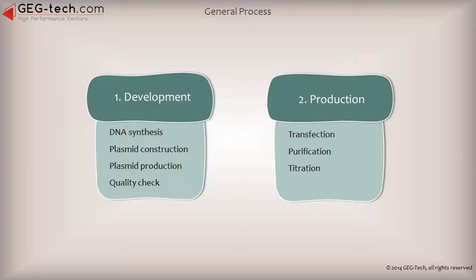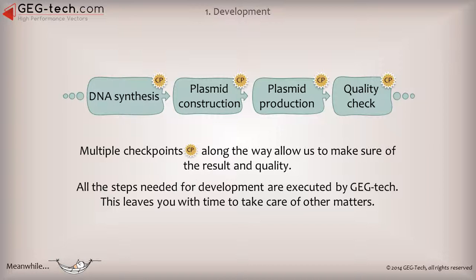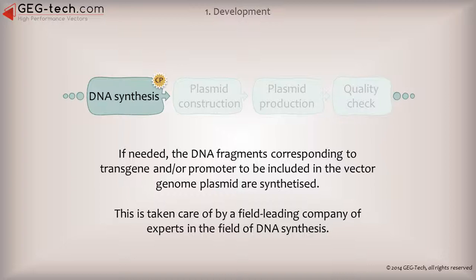The development steps occur when we add a new vector to our catalog, or when we have an on-demand advanced service request. All along the way, multiple checkpoints allow us to make sure of the result and quality of our plasmids. Note that all these steps are performed by GEG Tech, which leaves you with time to take care of other matters. If needed, the DNA fragments corresponding to transgene and/or promoter are synthesized by a high-standard company of experts in the field of DNA synthesis.